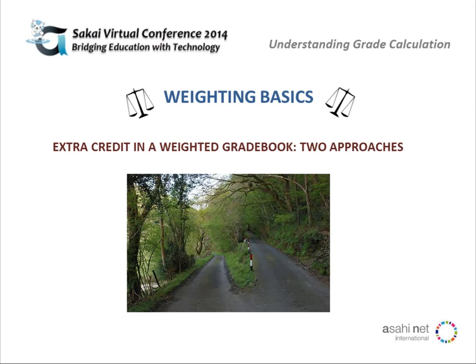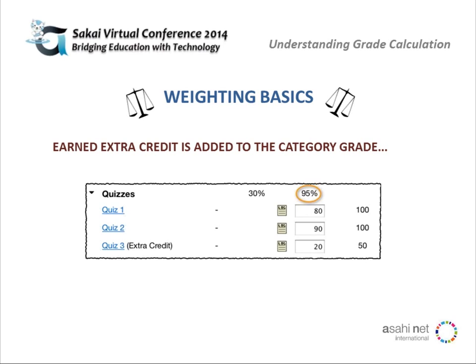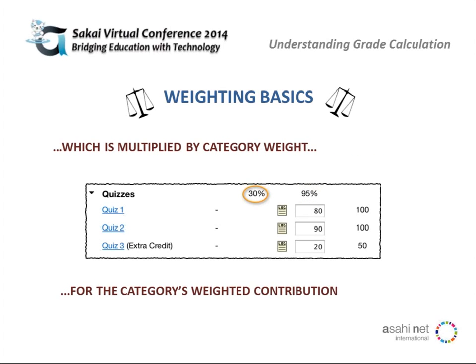There are two different ways to use extra credit in a weighted gradebook. Approach one is to add an extra credit item to a regular category — you'll see it labeled 'extra credit' in the gradebook tool. The earned extra credit is added to that category grade before it gets multiplied by the category weight. So the extra credit gets added to the category grade, then that category grade gets multiplied by the category weight to get the weighted contribution.